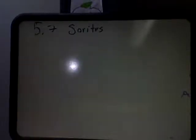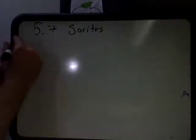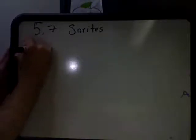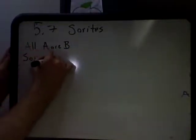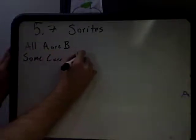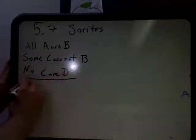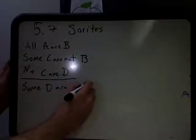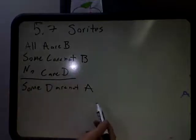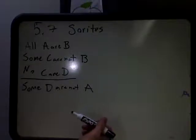I don't want to go too crazy, given the constraints of our time. Let me give you this example. Let's say we have: All A or B; Some C or not B; and No C or D. And then our conclusion is that Some D are not A. So the task we have to do here is determine whether or not this argument is valid or invalid. The first thing we need to do is figure out what sort of missing premise we may or may not have.